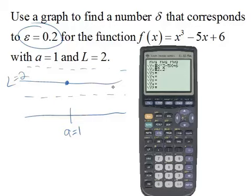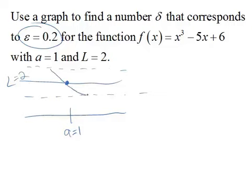And 0.2 below, if L equals 2, would be a line at 1.8. So let's go ahead and add those to our graph, and then we can see what's going on here.